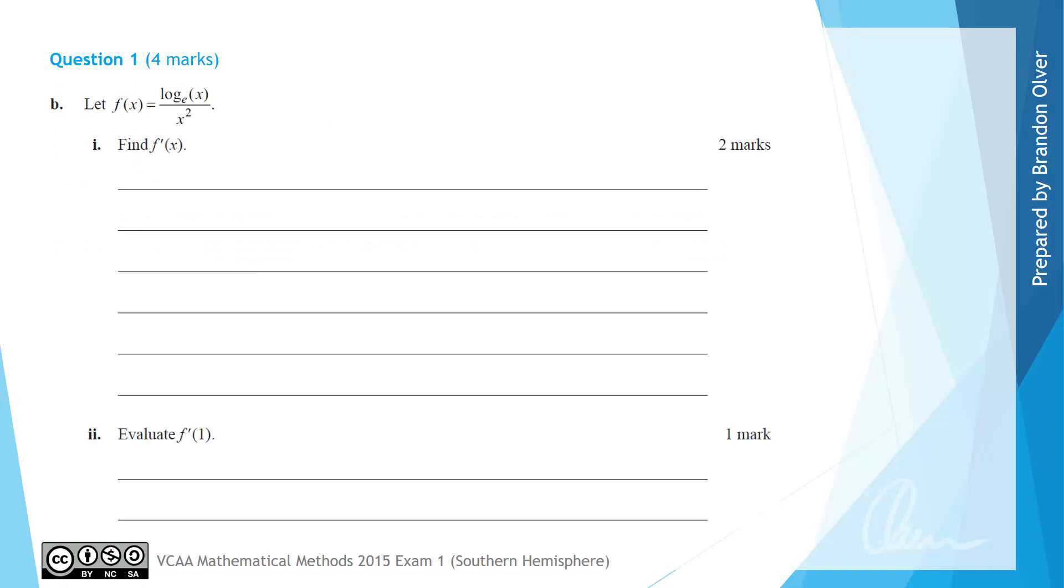For part B we have the function f(x) equals log_e(x) divided by x squared, and we are asked to find the derivative f'(x) for part 1.